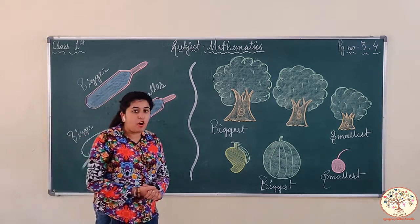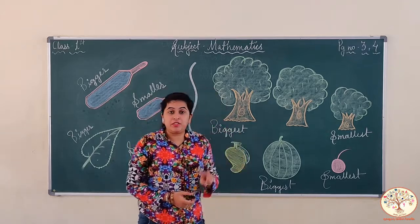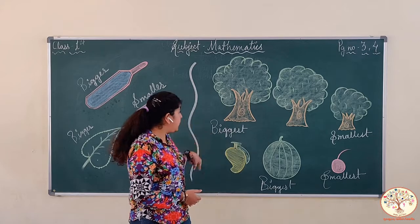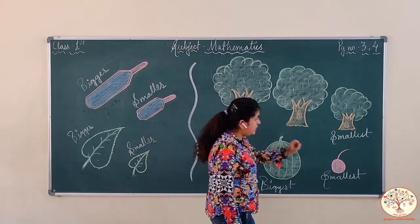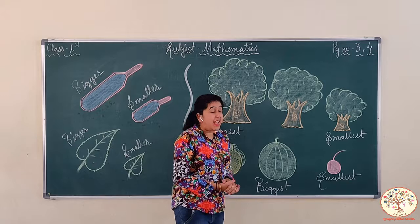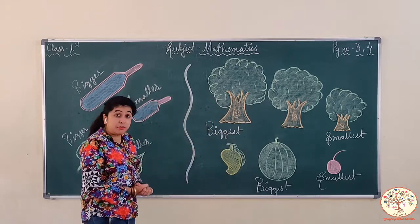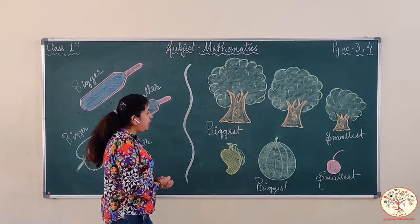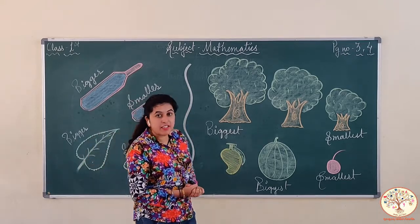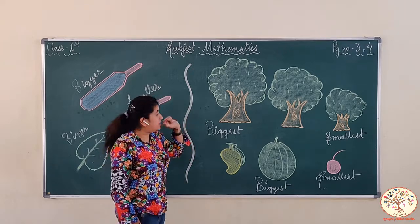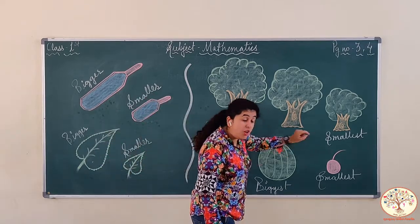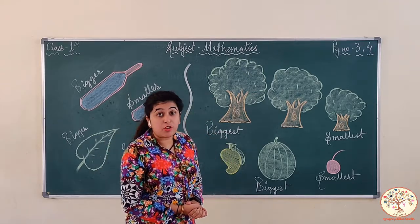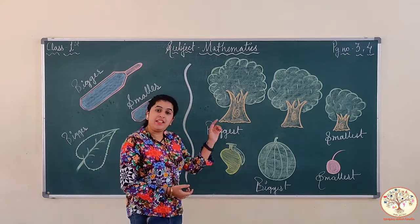Now let's move forward. When we are comparing three or more things, then what concept do we use? We use the concept of biggest and smallest. As you see, there are three pictures on the blackboard. These are trees. Tell me which one is biggest and which one is smallest. This one is biggest and this one is smallest. When we compare three objects or more than three objects, then we use the concept of biggest and smallest.